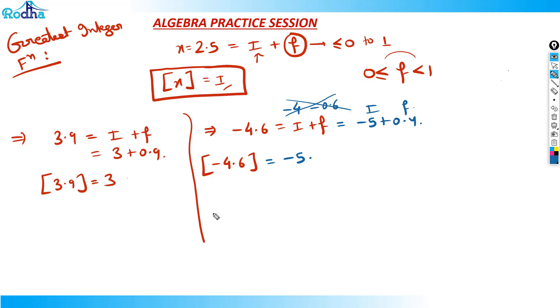So what I can say here is, the greatest integer function is always the next integer which is just less than or equal to x. So for minus 4.6, the next integral value just less than minus 4.6 is minus 5. For 3.9, it is 3, just less than it.